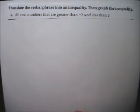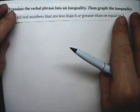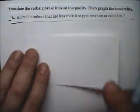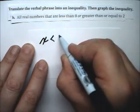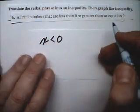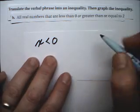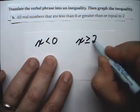Now let's do B part. B part says all real numbers that are less than 0 or greater than or equal to 2. So in a similar way, all real numbers that are less than 0, or greater than or equal to 2, so all real numbers greater than or equal to 2.